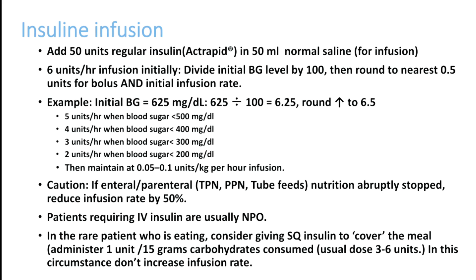The initial bolus or infusion of 0.15 units per kg is for the first hour; afterwards, calculate using blood sugar divided by 100. If blood sugar is 500 mg/dL, give 5 units per hour; at 400 mg/dL, give 4 units per hour; at 300, give 3 units per hour; at 200, give 2 units per hour. Then maintain at 0.05 to 0.1 units per kg per hour.